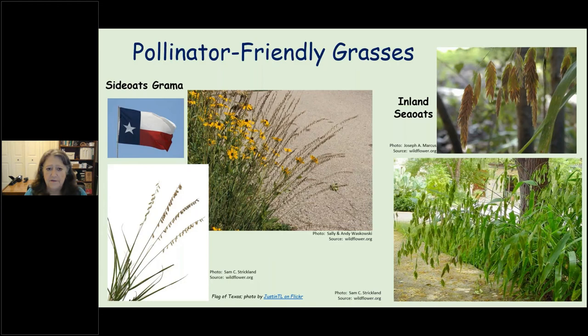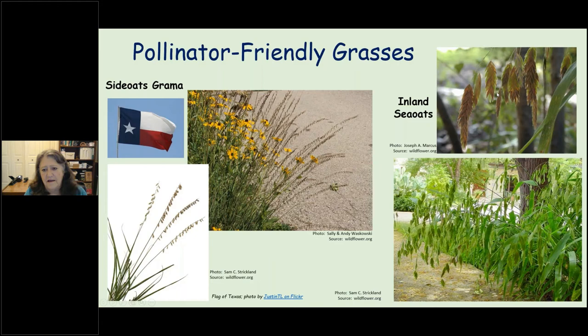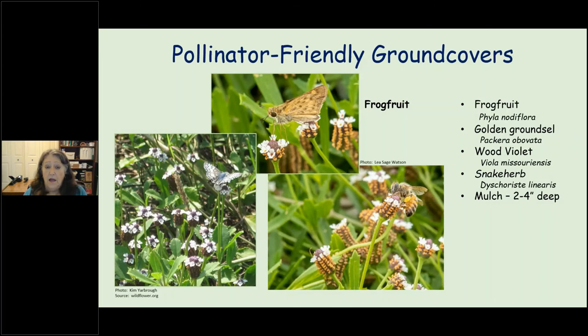Grasses bring something unique to your landscape, and pollinators love the shelter they provide. Side oats grama is our official state grass — so plant some as a salute to our state alongside our state flower, the bluebonnet. Inland sea oats are a fun plant; as the seeds dry out and the wind blows through them it sounds like a little wind chime. These are grasses that pollinators will hide and seek shelter in.